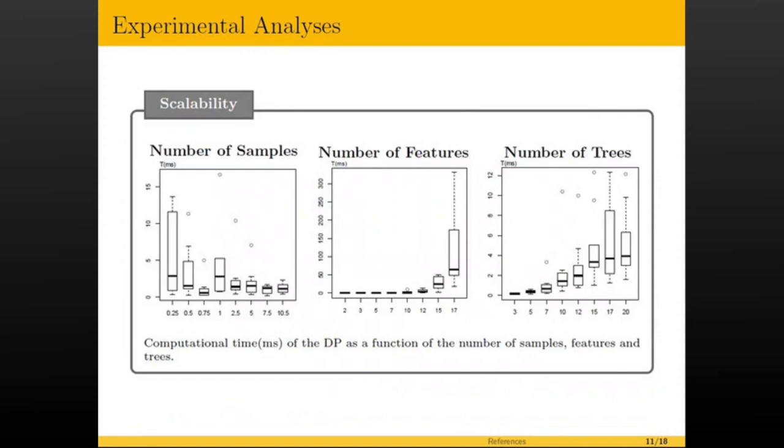The first experiment we do relates to the scalability of our algorithm. We tested the data set with a varying number of samples, number of features, and number of trees. And we observed that the number of samples doesn't really matter for the algorithm. In contrast, the number of features is very important. When you have a large number of features, the number of states in the dynamic programming quickly grows. And in fact, we can handle data sets with this optimal algorithm up to more or less 20 features. The number of trees also has an impact on computational time, but it's nowhere close to the impact of the number of features.